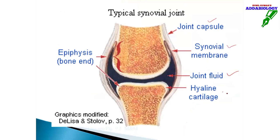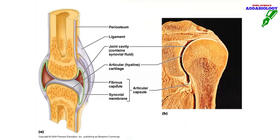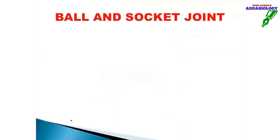The diagram shows joint capsule, synovial membrane, joint fluid, hyaline cartilage, and the epiphyseal bone. This is also shown as a cross-section of a real human hand bone that was cut — this is what a synovial joint looks like in reality.